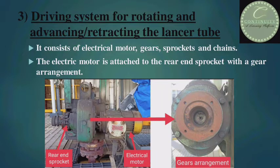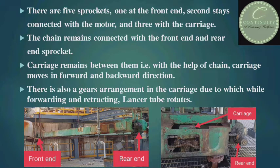Third part: driving system. It consists of an electrical motor, gears, sprockets and chains. The electric motor is attached to the rear end sprocket with a gear arrangement. Look at the figure — there are rear end sprocket, gearbox and electrical motor. There are 5 sprockets: one at the front end, one connected with the motor, and three with the carriage. The chain remains connected with the front end and rear end sprocket. With the help of the chain, the carriage moves in forward and backward direction. There is also a gear arrangement in the carriage, due to which while forwarding and retracting, the lancer tube rotates. The figure on the left side shows the front end and rear end of the soot blower, and the figure on the right side shows the carriage.